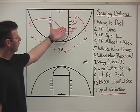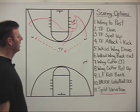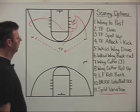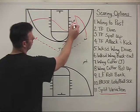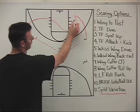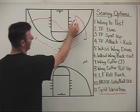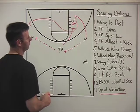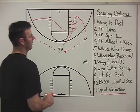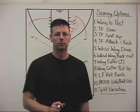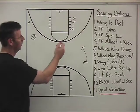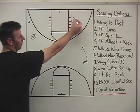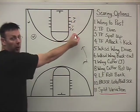Now we've got both of our screeners set in a stagger. What we're going to do is we're going to roll our low forward, our first screener, right back into the center of the floor. Continuing now with our split variation, we've got our low forward and trail forward stagger.